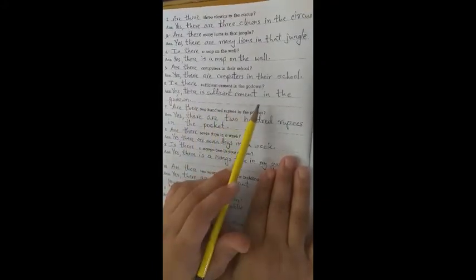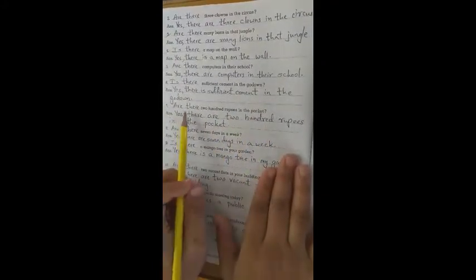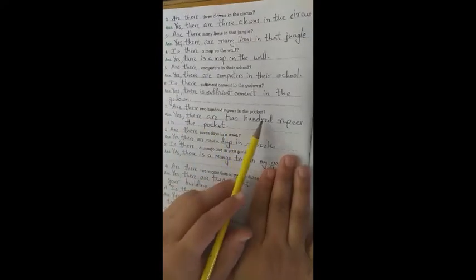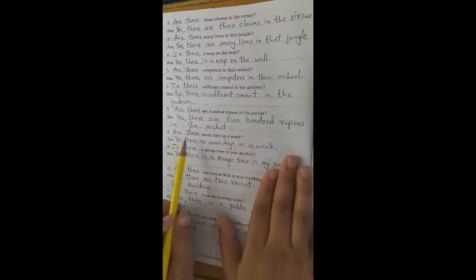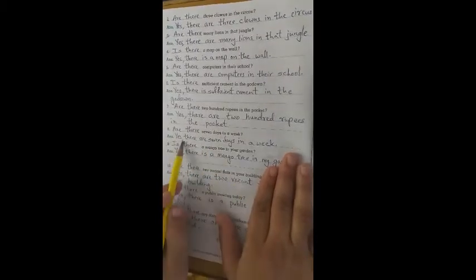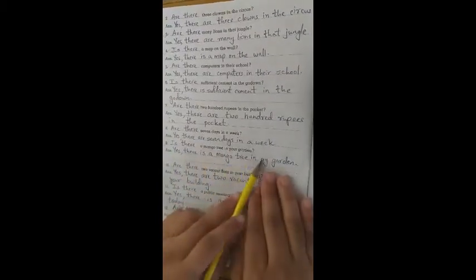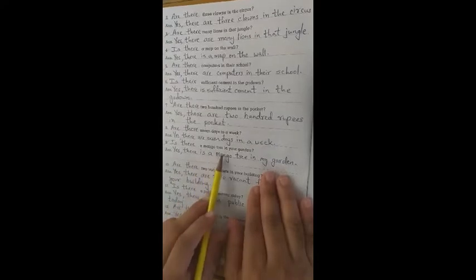Is there sufficient cement in the go-down? Yes, there is sufficient cement in the go-down. Are there two hundred rupees in the pocket? Yes, there are two hundred rupees in the pocket. Are there seven days in a week? Yes, there are seven days in a week.